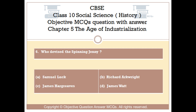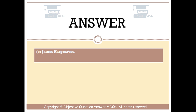Question number 6. Who devised the spinning Jenny? Option A, Samuel Luck; Option B, Richard Arkwright; Option C, James Hargreaves; Option D, James Watt. The right answer is Option C: James Hargreaves.